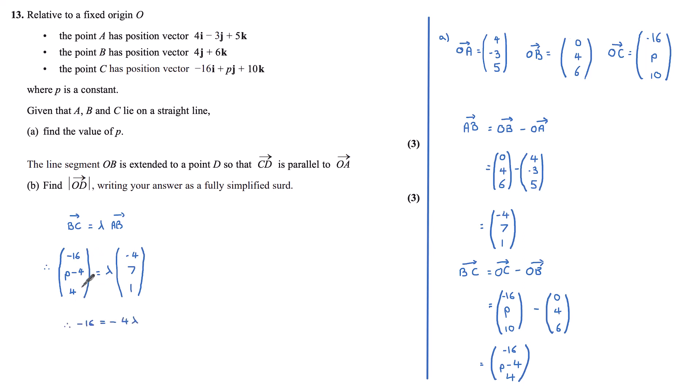So setting the components of i equal to each other, we have -16 equals lambda times -4. Dividing both sides by -4 gives us that lambda equals 4. And we can check this with the k components. Does 4 equal 4 times 1? Yes, it does. So lambda is equal to 4.